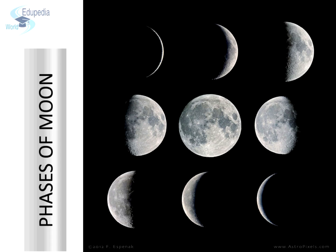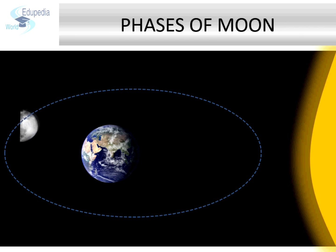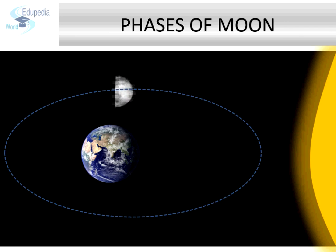Phases of Moon. Just like Earth, the moon receives light from the sun. The way we have day on half of the Earth and night on the other half at all times, the moon also has 50% of its surface illuminated by the sun and 50% in darkness at all times. We can see only that part of the moon which is illuminated. As the moon revolves around the Earth, we are able to see different portions of the moon which is illuminated by the sun's light. However, the fact that 50% of moon is illuminated does not change.